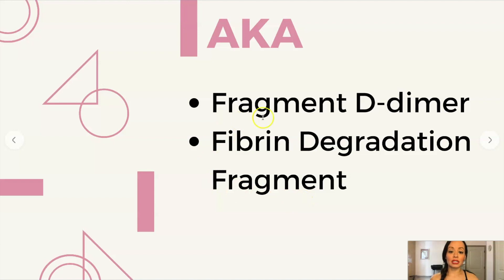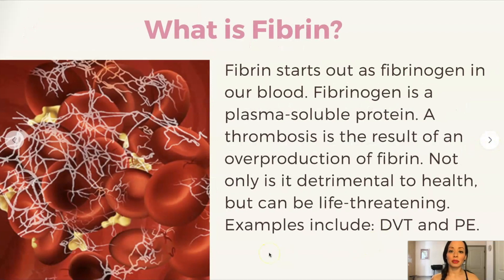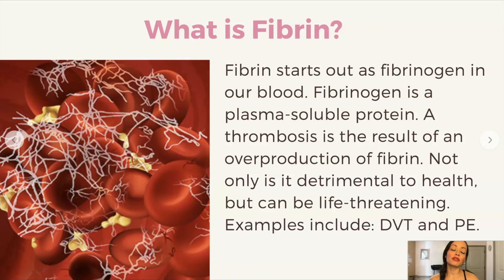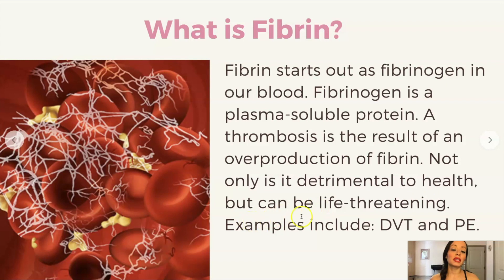D-dimer is also known as fragment D-dimer or fibrin degradation fragment. Fibrin starts out as fibrinogen in our blood — you can see the fibrin here in the red blood cells. Fibrinogen is a plasma-soluble protein, and a thrombosis is the result of an overproduction of fibrin. When too much fibrin is formed, it creates a clot. A frequent area for a DVT is in the calf — this clot forms behind the calf. Not only is it detrimental to health, but it can be life-threatening. Examples of a clot include a deep vein thrombosis and a pulmonary embolus.